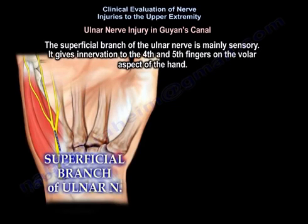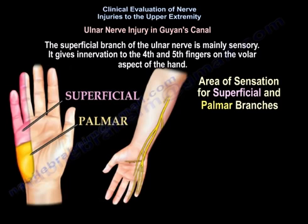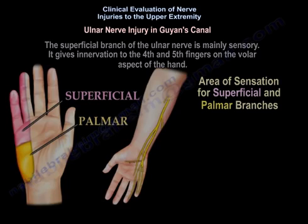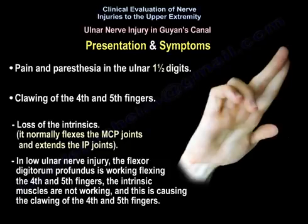The superficial branch of the ulnar nerve is mainly sensory, providing innervation to the fourth and fifth fingers on the volar aspect of the hand. This is an illustration of the area of sensation for both the superficial and palmar branches of the ulnar nerve.